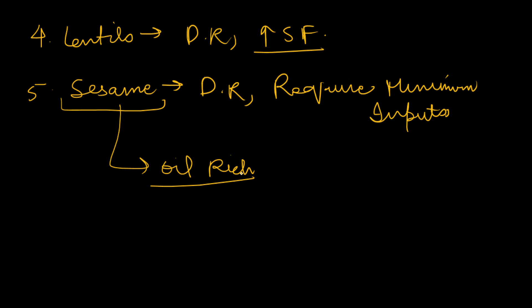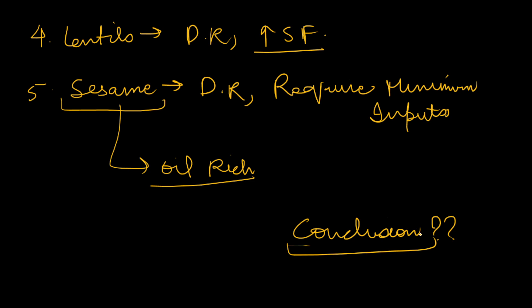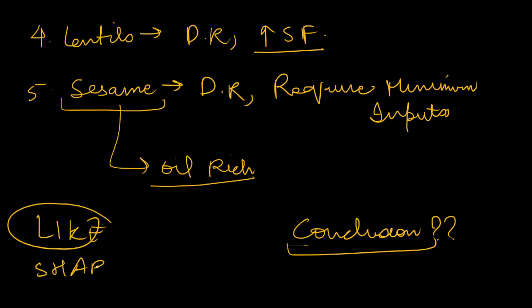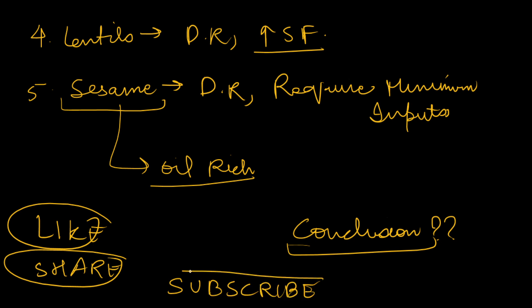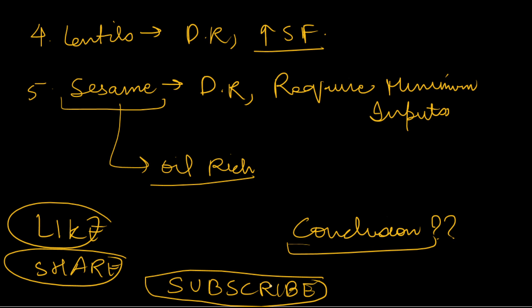So this is all for today. I think you understand both parts of the question. Writing five to six crops with characteristics will be enough. Please do conclude your answer positively by writing how we can improve sustainability and productivity in dryland areas and help farmers there. If you like this video, please press the like button, share, and subscribe. Please also join the test series — it will be very helpful. Have a nice day, thank you.